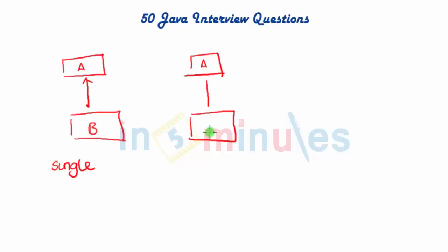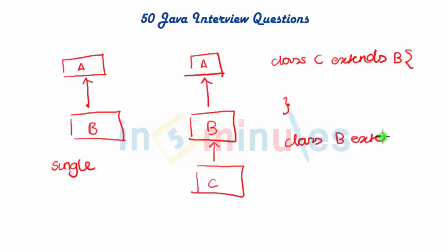We have multilevel inheritance. So we have A over here, B and C down here. So this looks something like class C extends B, and let me just write this down here, class C extends B and class B extends A. So this is how this hierarchy looks like and this is multilevel inheritance.